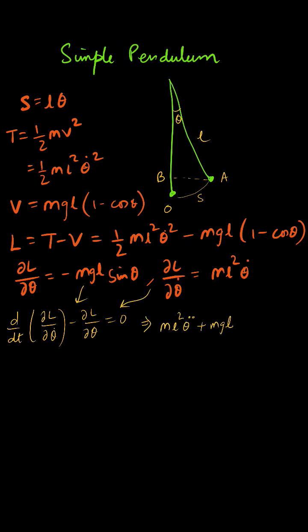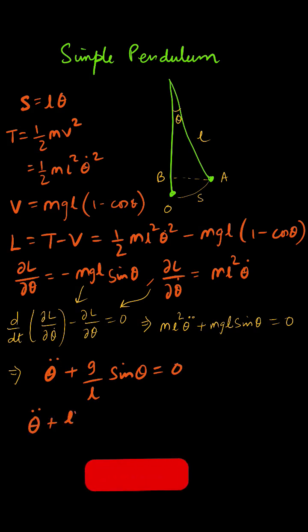Now for small angle, this reduces to theta double dot plus g by L theta equal to zero, which is in the form of a harmonic oscillator, and T equals 2 pi times the square root of L by g.